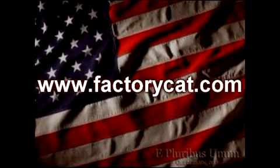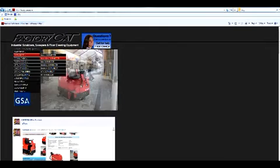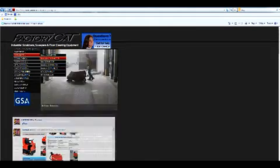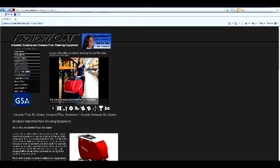For more information about your factory cat micromag, you can contact us on the web at www.factorycat.com. Once on the site, click on the scrubbers tab, then scroll down and click on the micromag tab. Located just underneath the picture frame are eight icons that will give you all the information that you need on your micromag scrubber.